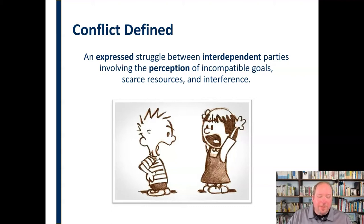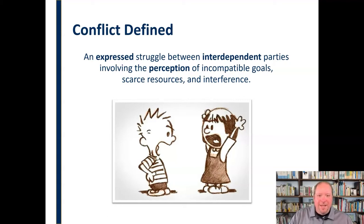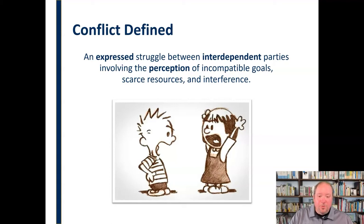Conflict also takes place between interdependent parties. If it's just some random person on the street, that's not interpersonal conflict. Interpersonal conflict takes place between parties who are connected and affected by one another on a regular basis and on a longer-term basis. It also involves at least the perception of one of these things: incompatible goals, scarce resources, and interference. It could actually involve those things, or it could just involve one or both people perceiving that those things are in effect.